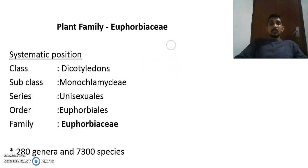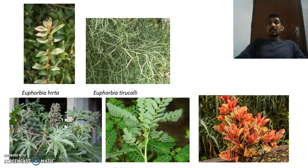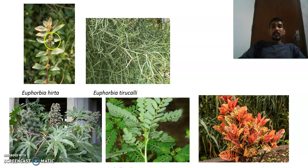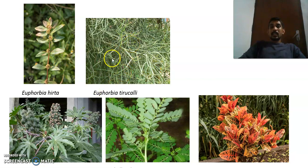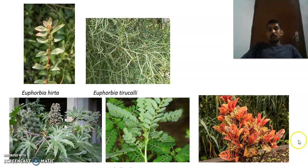When we move into the examples of this family, I think you are very familiar with these plants. The first one — look at my cursor — is Euphorbia hirta. You can see a lot of this plant on our college campus. It is a green-colored, much-branched plant.